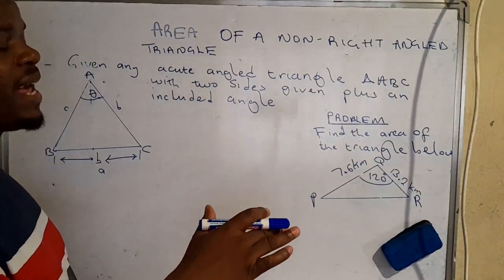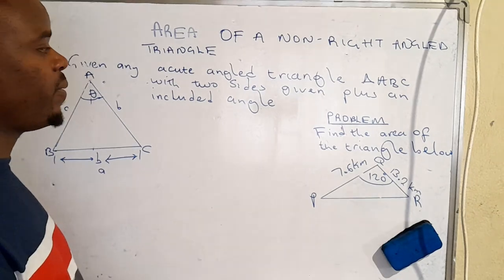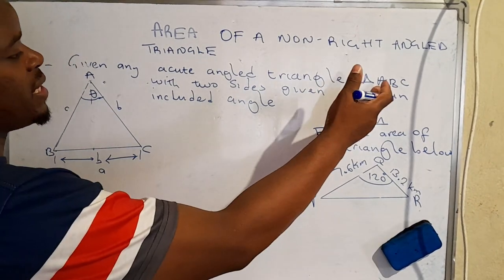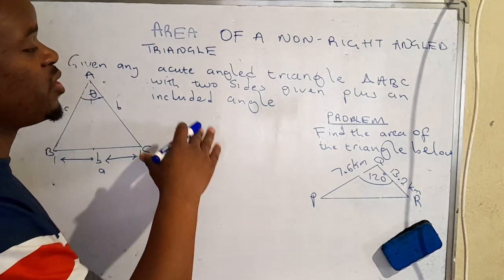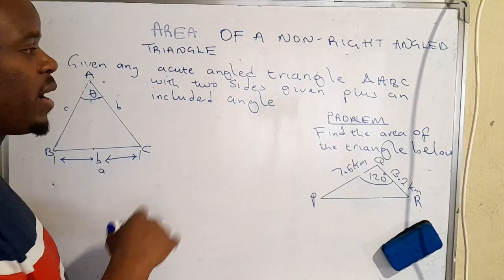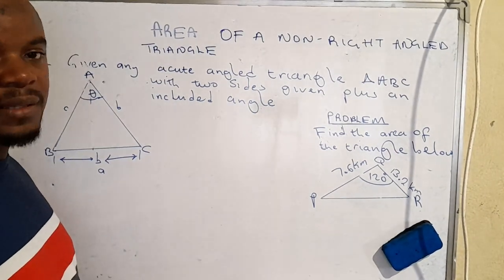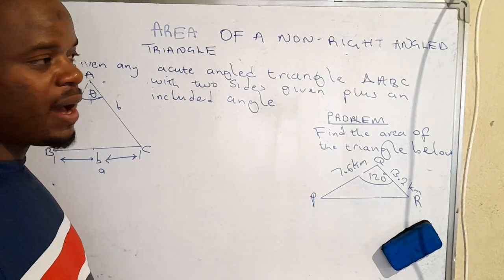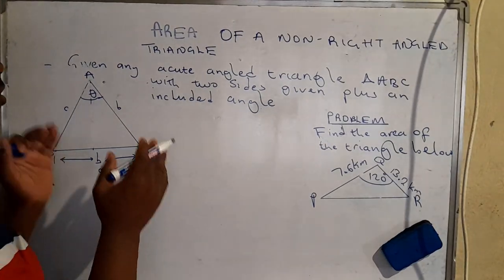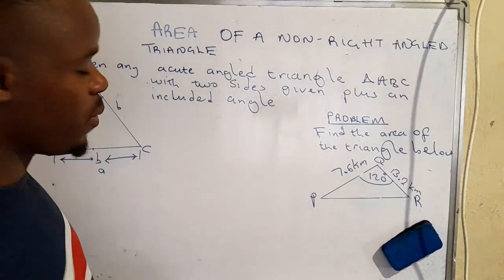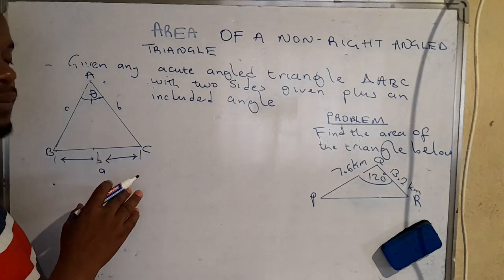So when you're given any acute angled triangle with the vertices A, B, C, and you're given two sides of that triangle plus an included angle, how can you find the area? Now what we're going to do is pick on this one and illustrate how you can actually find the area of a non-right angle triangle.